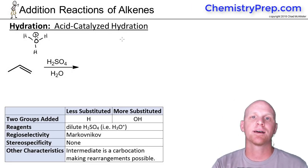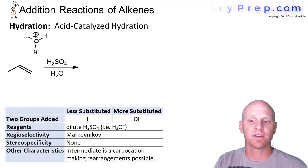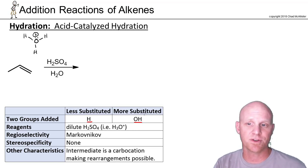So the next reaction on our list is acid-catalyzed hydration. We'll find out we've actually got three different ways to do a hydration reaction. We're adding H and OH, essentially water, across the alkene. That's why they call this a hydration reaction.